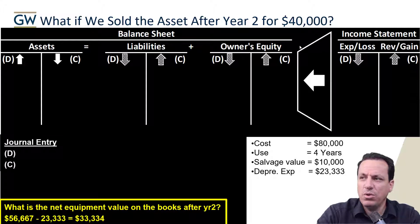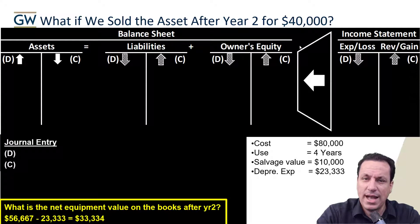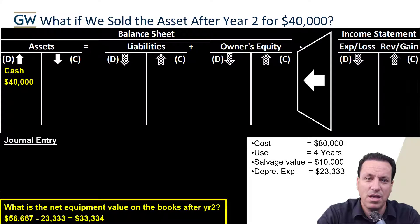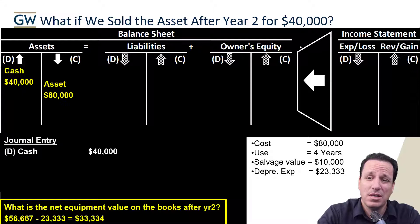If we sold the asset after year two, we still have that accumulated depreciation on the books and we receive $40,000 cash. Start with the things you can touch — tangible assets make things easier. We're getting cash, so that's a debit of $40,000. We're also removing the equipment from the books, so we credit the asset for its full historical cost of $80,000.